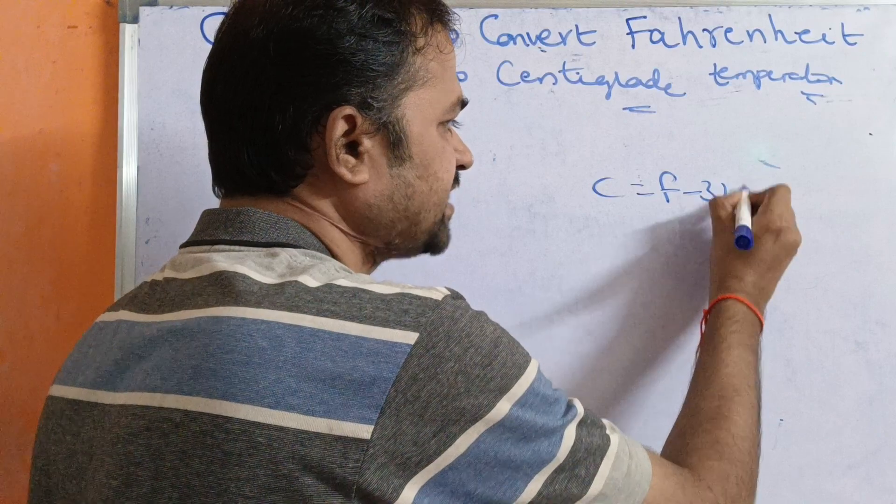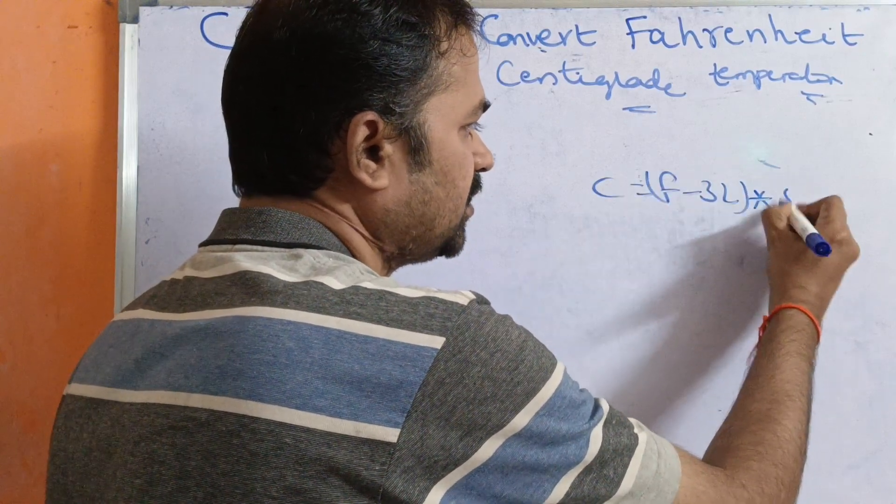Fahrenheit temperature input, whereas C is the output. C equals - what is the formula? C equals F minus 32 into 5 by 9. This is the formula.